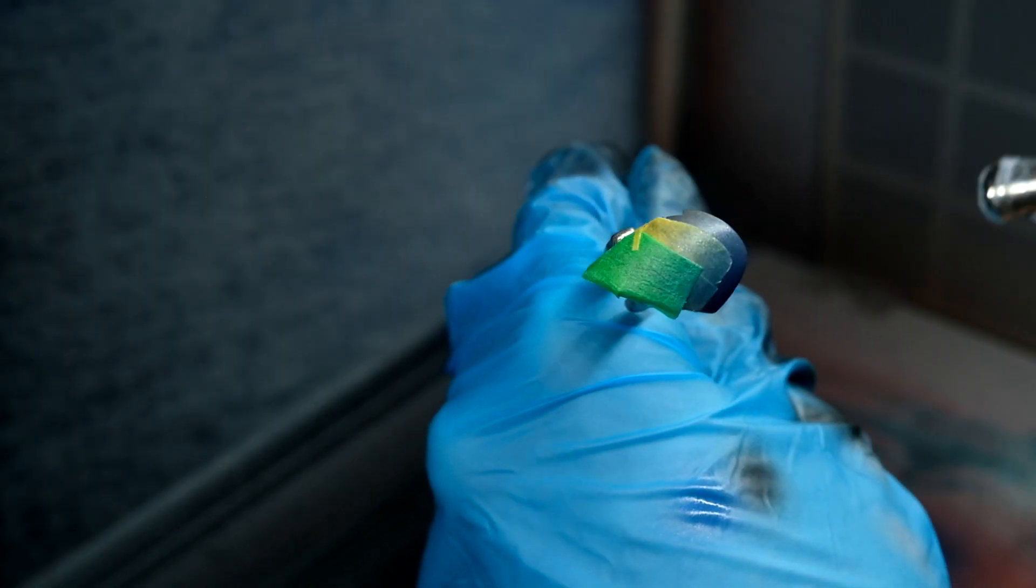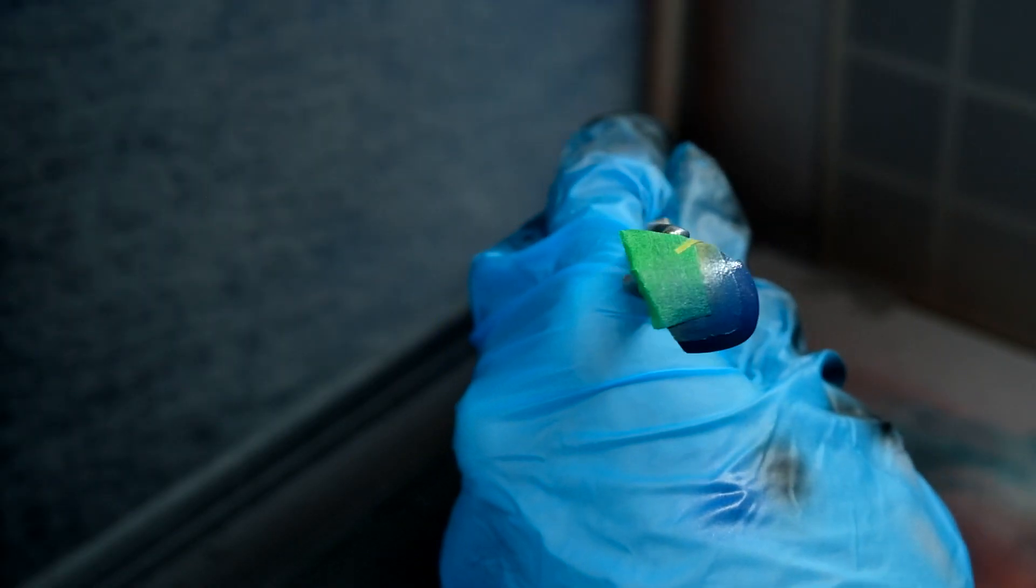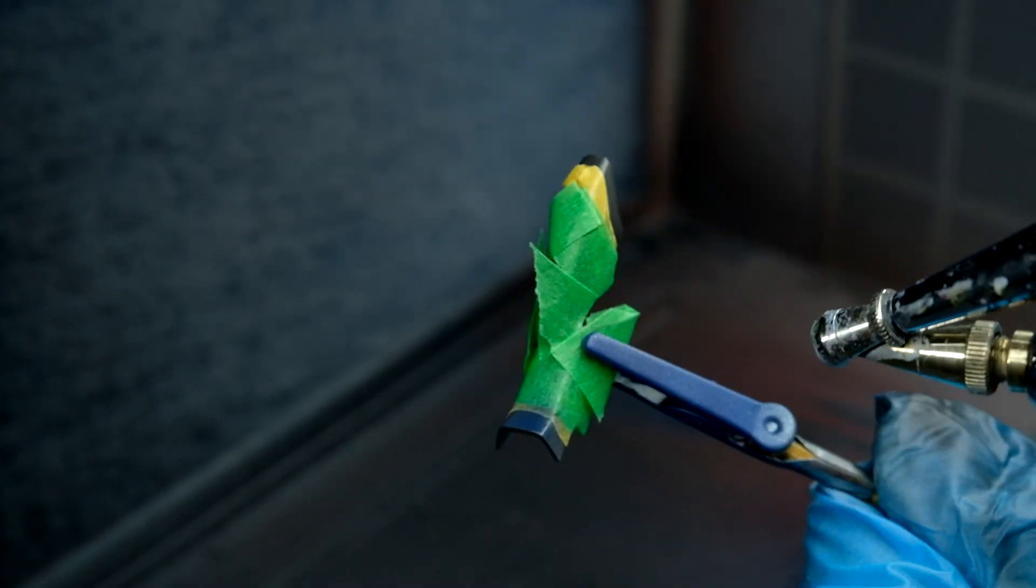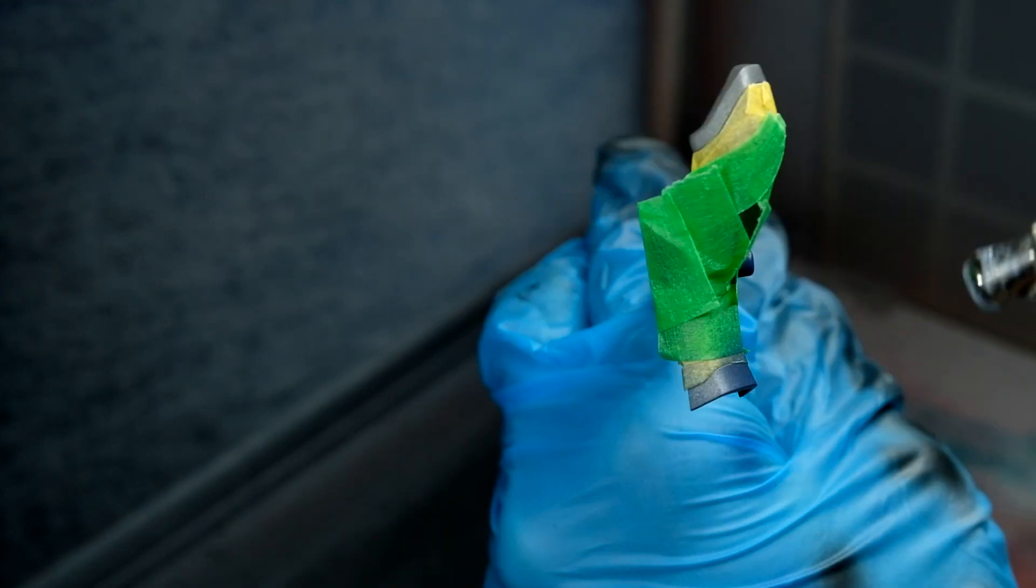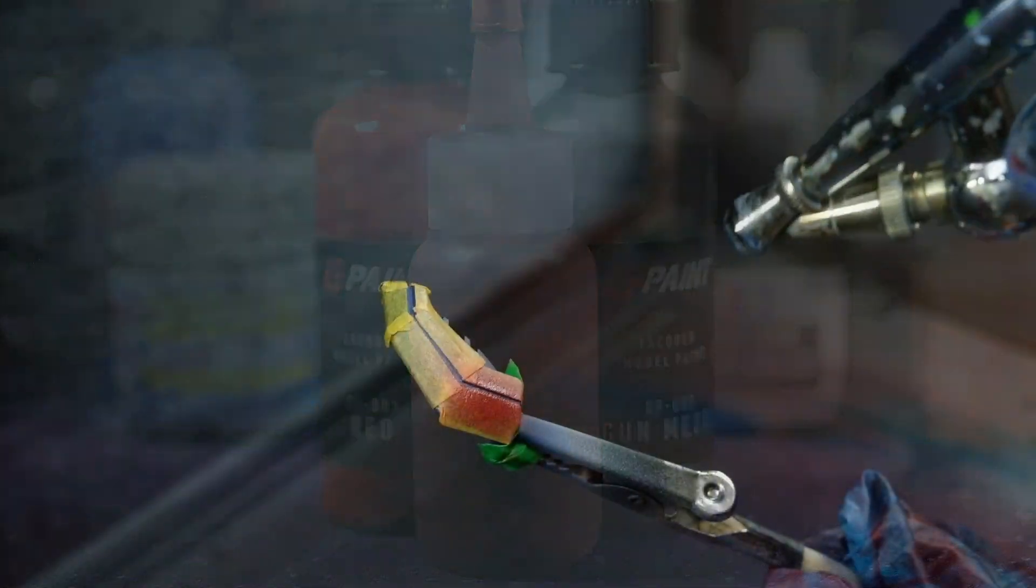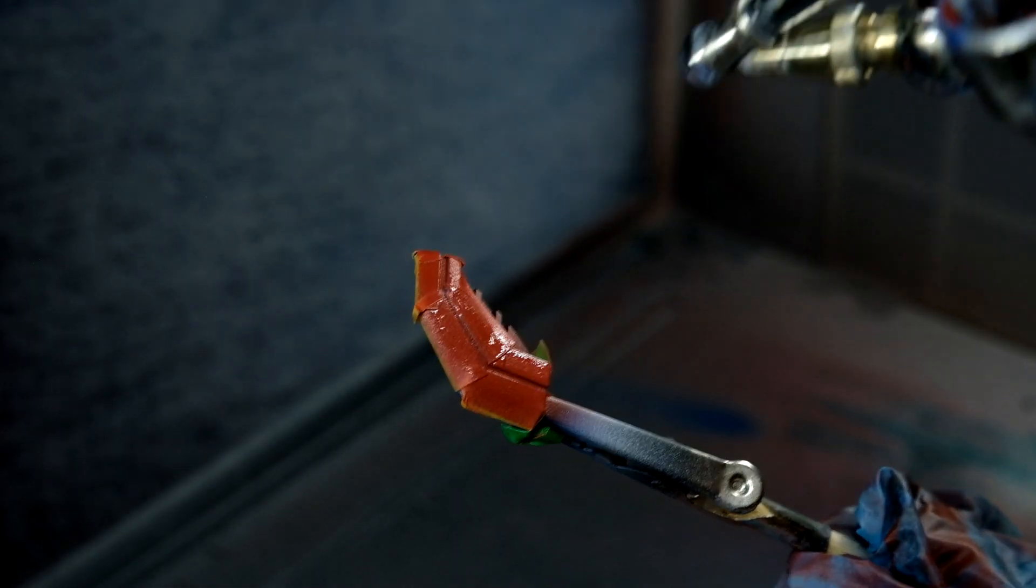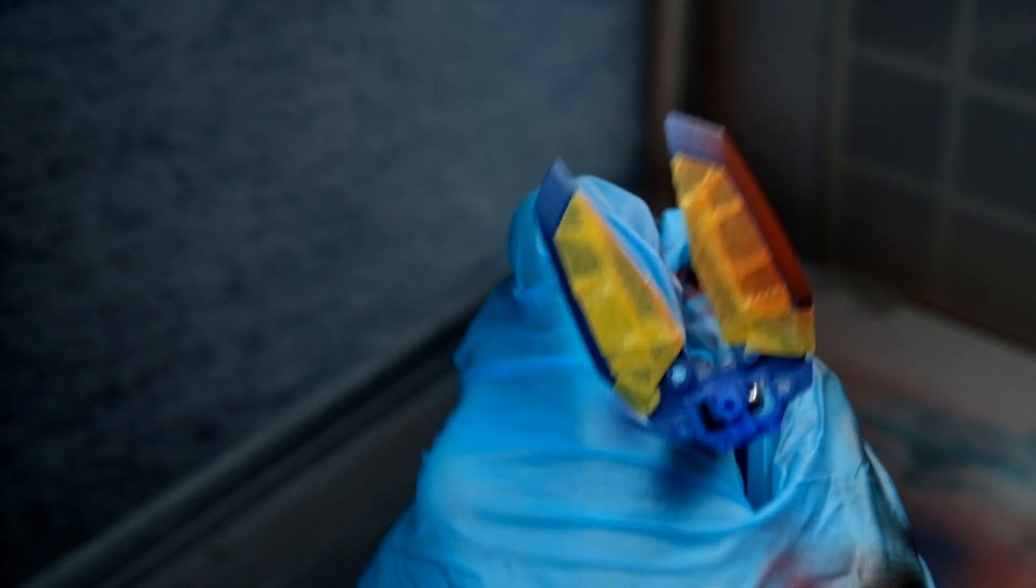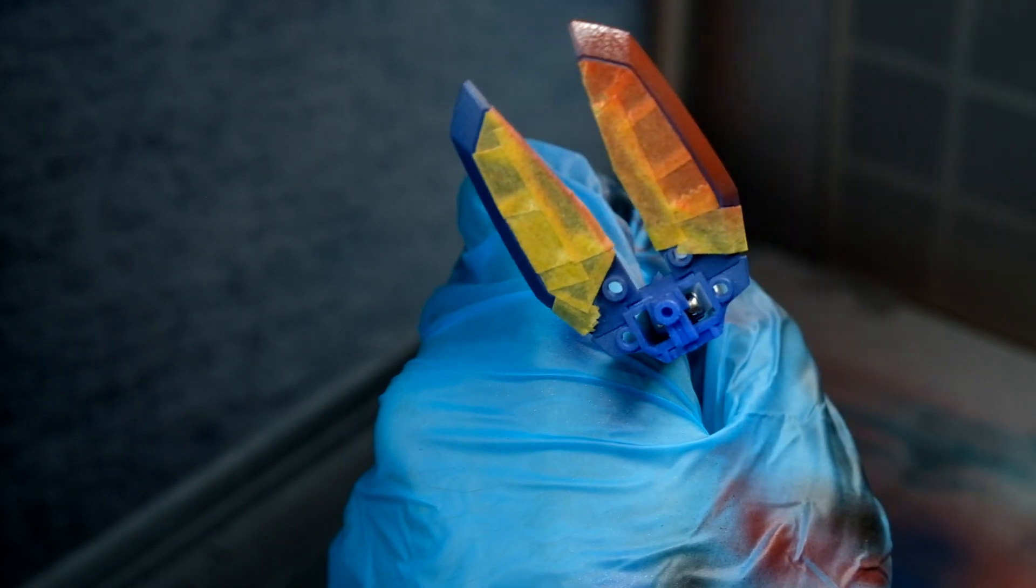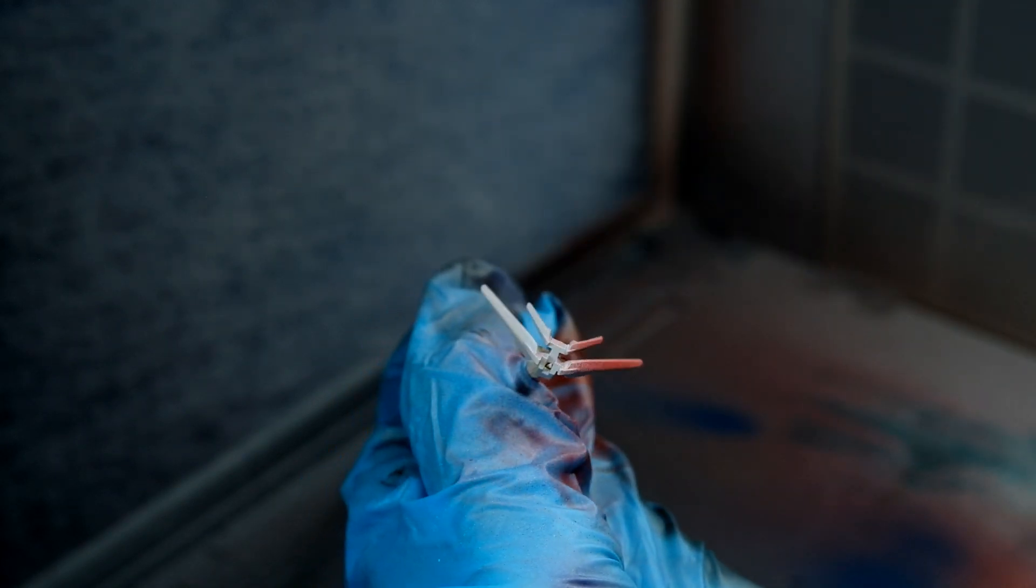Now, back to the airbrush, the silver masked sections get the metallic blue from before, whereas the blue masked pieces get a metallic red mix instead. This mix has a greater ratio of red to gunmetal because I didn't want it to look as desaturated as the blue, and the yellow pieces from this kit are also getting a coat of this red.